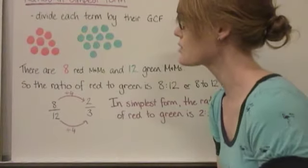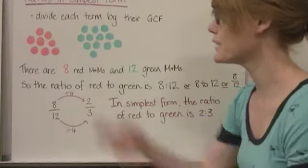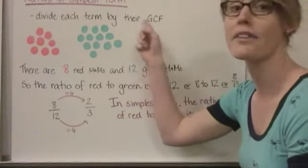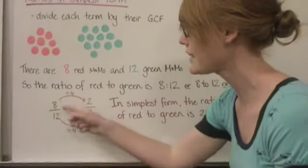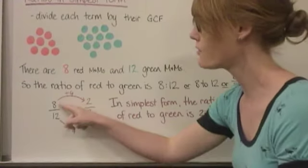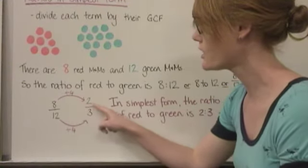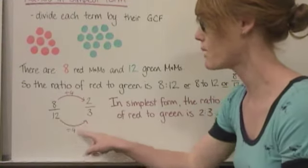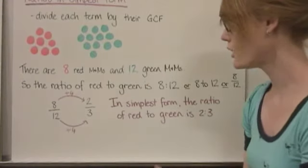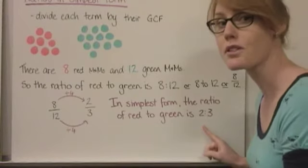So in order for me to simplify this ratio and find it in its simplest form, I would need to divide each term by their greatest common factor. So I would need to look at 8 and 12 and find that the greatest common factor is 4. So I would divide each term by 4. 8 divided by 4 is 2, and 12 divided by 4 is 3. So in its simplest form, the ratio of red to green is 2 to 3.